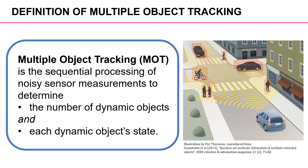Multiple object tracking is defined as the sequential processing of noisy sensor measurements to determine the number of dynamic objects and each dynamic object's state. Therefore, multiple object tracking is often said to have two equally important parts: the first is about determining the number of objects, and the other is about determining the object states. Indeed, if we were to somehow know exactly the number of objects, the multiple object tracking problem is simplified.